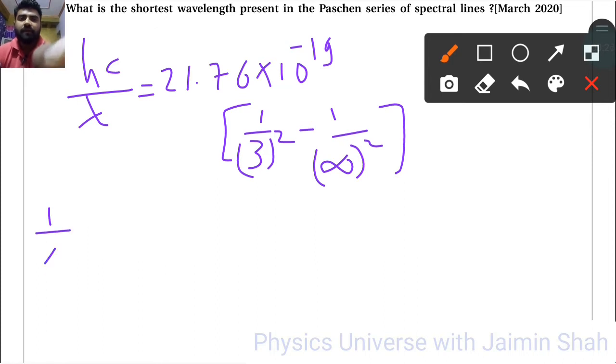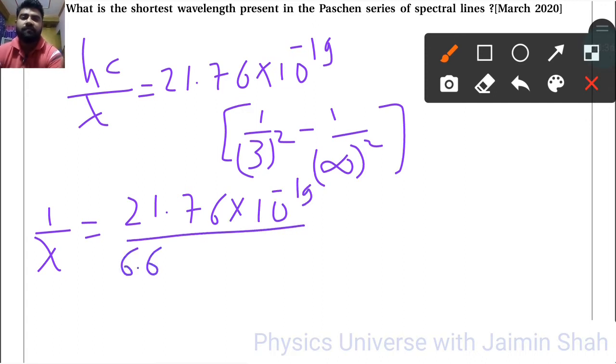1 upon lambda is equal to 21.76 into 10 raised to minus 19 upon hc. hc is 6.63 into 10 raised to minus 34 into c, 3 into 10 raised to 8, into 1 upon 9. 1 upon infinite square will be 0.